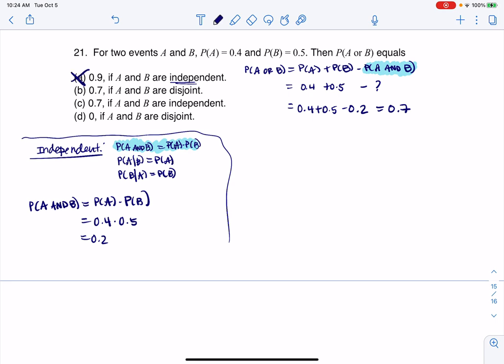And actually, as I look at it, oh, there's my correct answer, because there's the independent and there's 0.7. So that's going to be my answer.